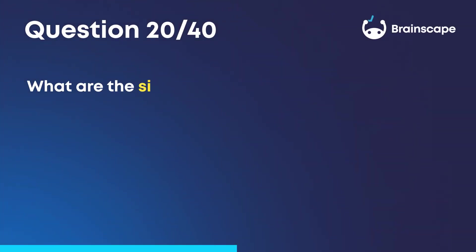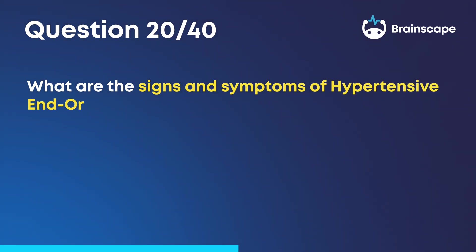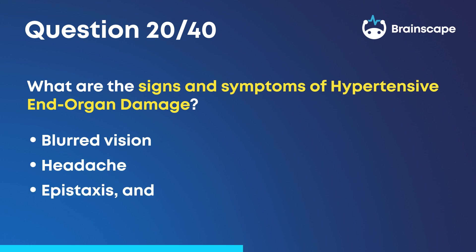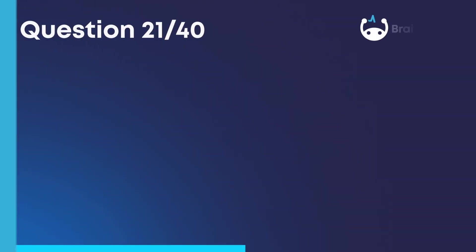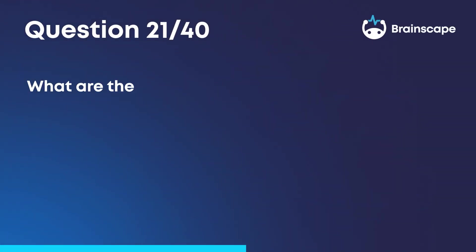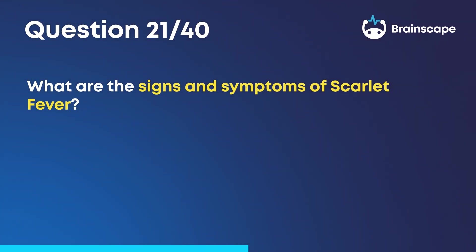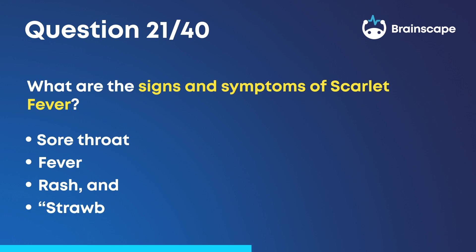Question 20: What are the signs and symptoms of hypertensive end-organ damage? Blurred vision, headache, epistaxis, and tinnitus. Question 21: What are the signs and symptoms of scarlet fever? Sore throat, fever, rash, and strawberry tongue.